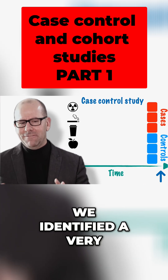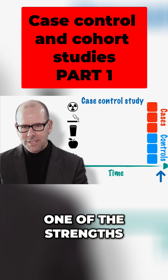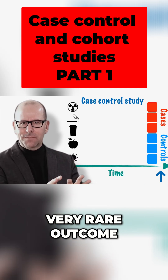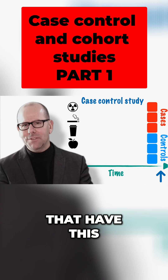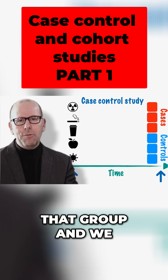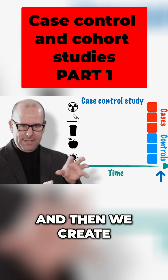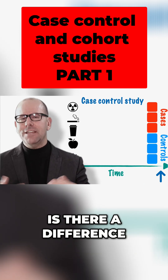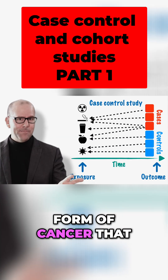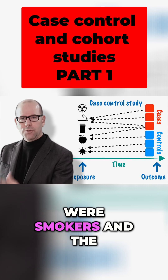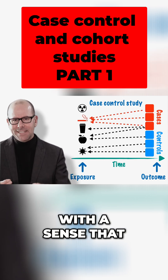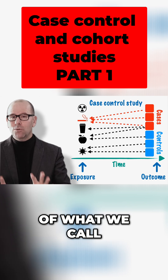For example, let's say we identified a very rare kind of cancer. This is actually one of the strengths of case control studies — you can use them to study a very rare outcome. There aren't many people with this, but we can find them by looking at hospital records to identify that group. We create a control group and ask whether there's a difference in their exposure. We look at their histories and find that almost all of the rare cancer cases were smokers, while most of the control group weren't smokers. That provides us with evidence of what we call a correlation.